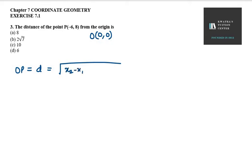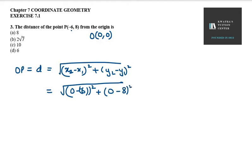It will be (x2-x1)² + (y2-y1)². x2's value is 0, x1 is -6 square plus y2. y2 is 0 again and y1 is 8.